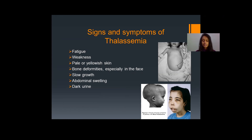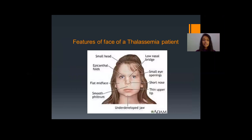Thalassemia patients also have dark urine. This picture shows the facial features of a thalassemia patient. As you can see, they have a small head, epicanthal folds, flat mid-face, smooth philtrum, low nasal bridge, small eye opening, short nose, thin upper lip, and an underdeveloped jaw.